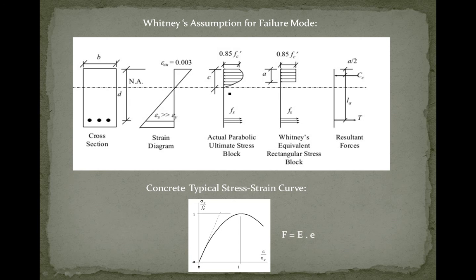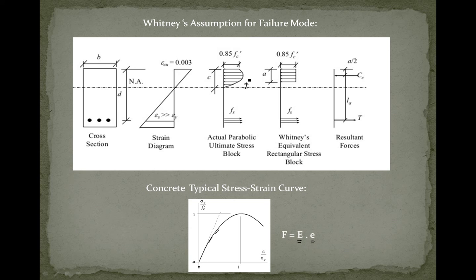Moving from strain to stress, we have the true stress profile. The stress of concrete increases as we move up to the edge. To obtain the stress, you multiply the strain times the modulus of elasticity, although the strain is increasing as we move up, the modulus of elasticity — the slope of the stress-strain curve — decreases in a larger way, so the stress at the edge won't be the maximum value. This true stress profile takes a parabolic form and depends on the modulus of elasticity change rates and many other factors.